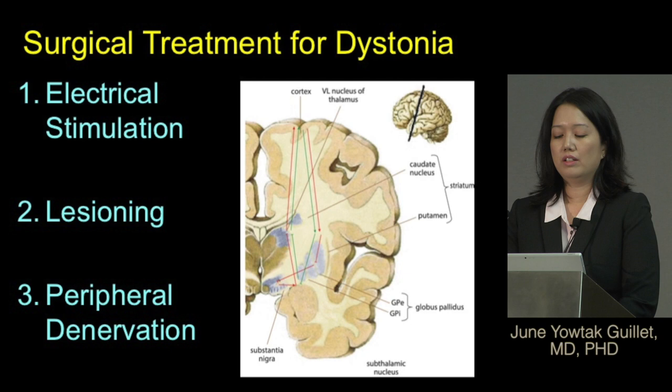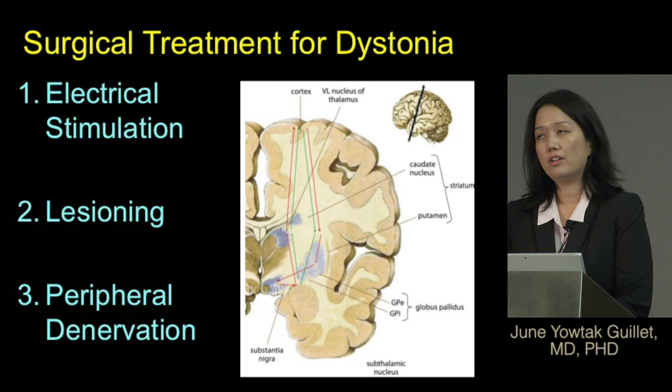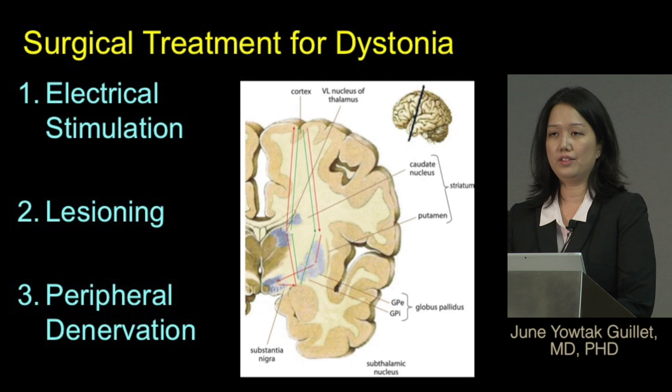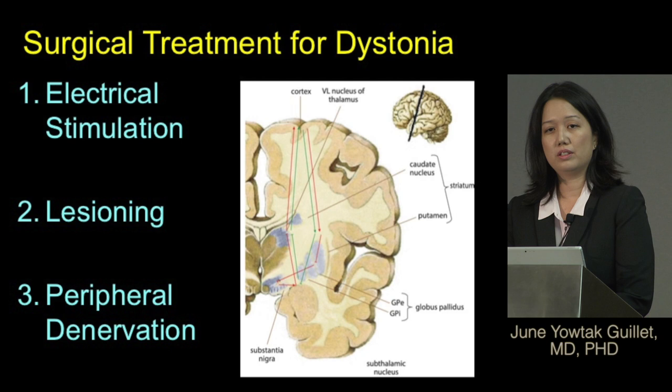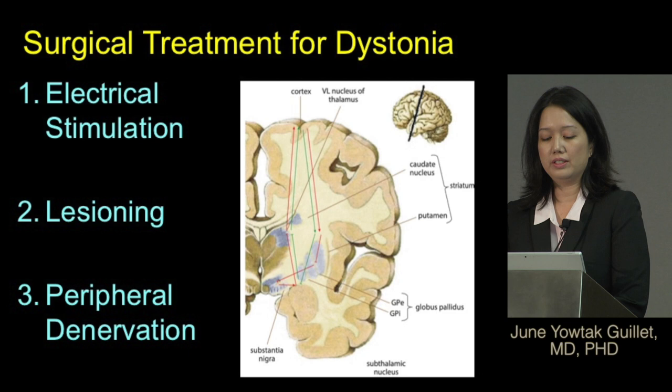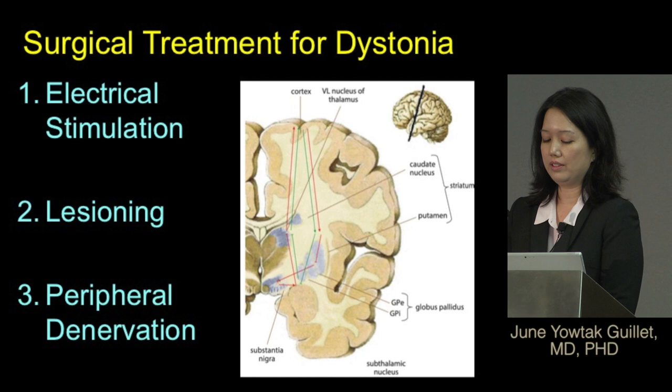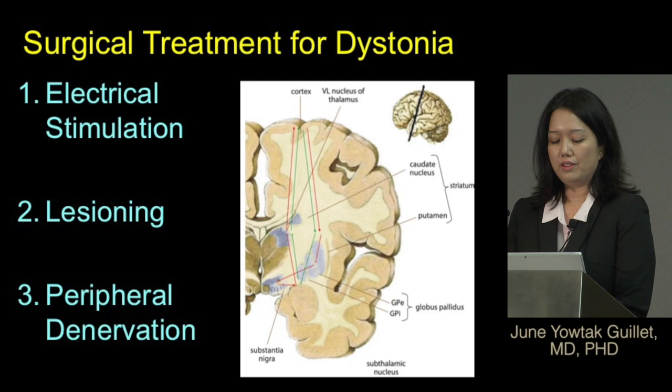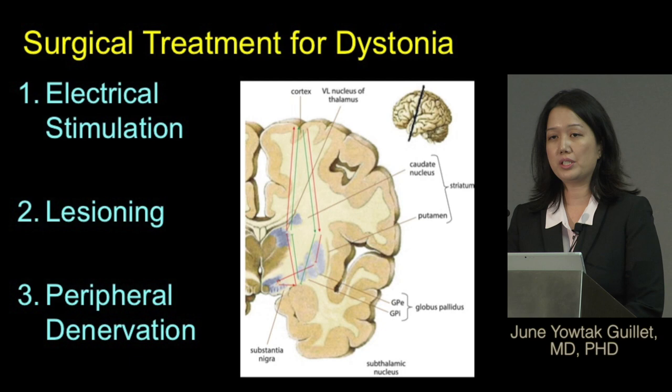Surgical approaches have included electrical stimulation or lesioning of different areas in the brain. On the right you can see a picture of the cortex of the brain and the different pathways involved with movement — known as the cortical-thalamo-basal ganglia-cortical pathway. Different components have been targeted historically, including cortical stimulation, thalamic stimulation, the caudate nucleus, the putamen, the globus pallidus, and the subthalamic nucleus.